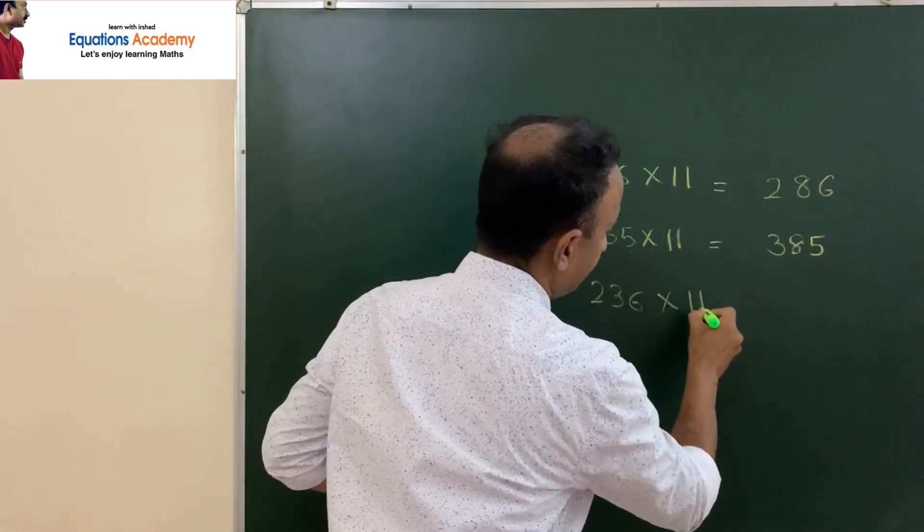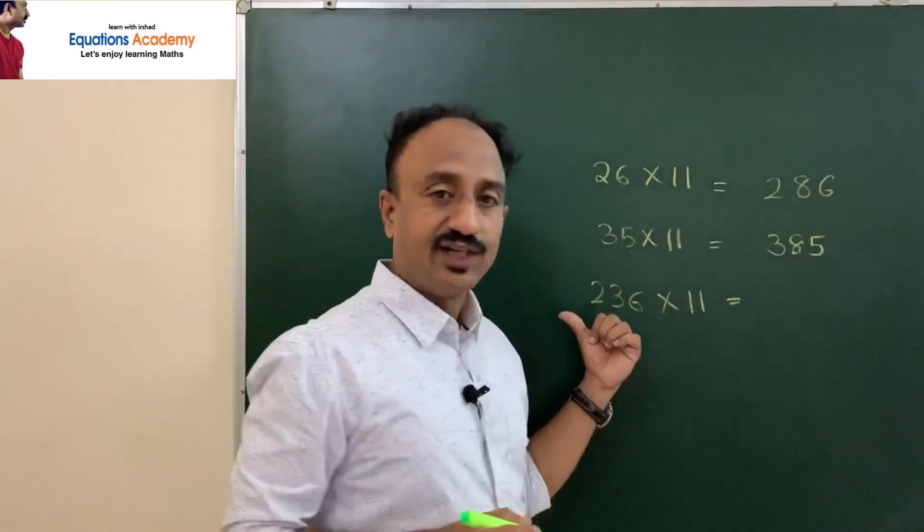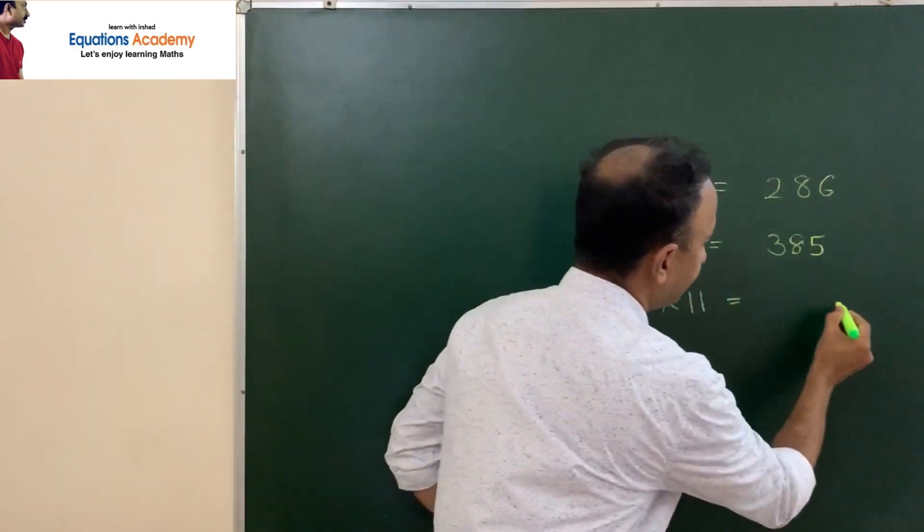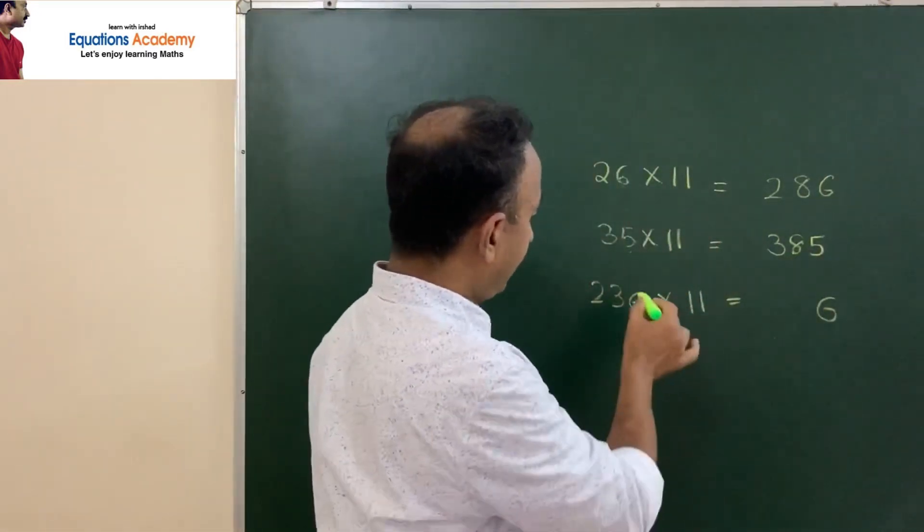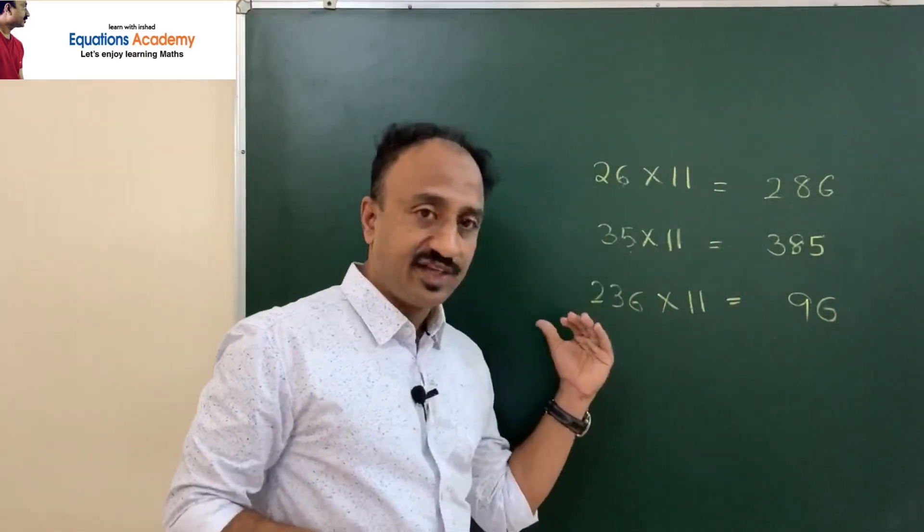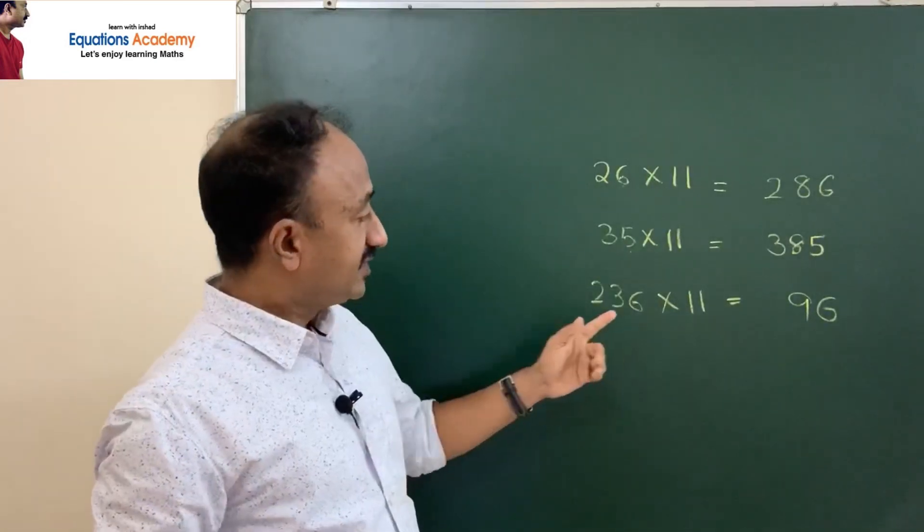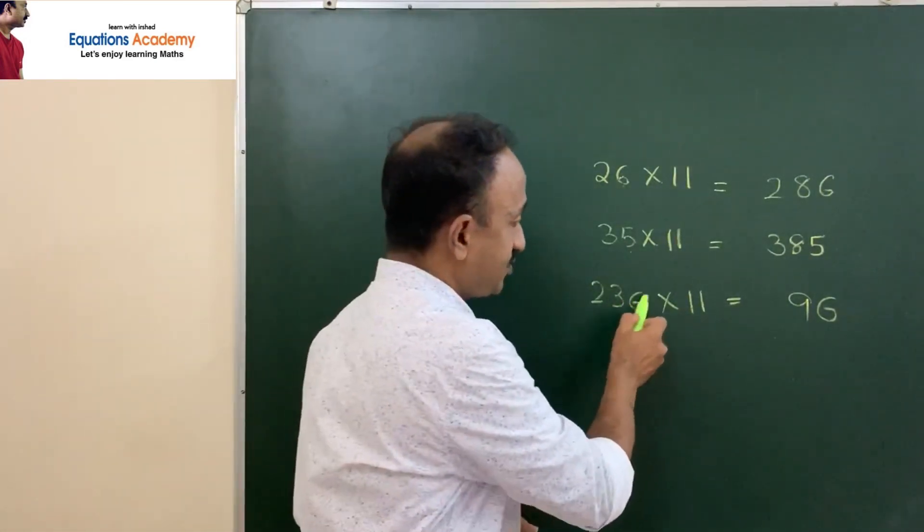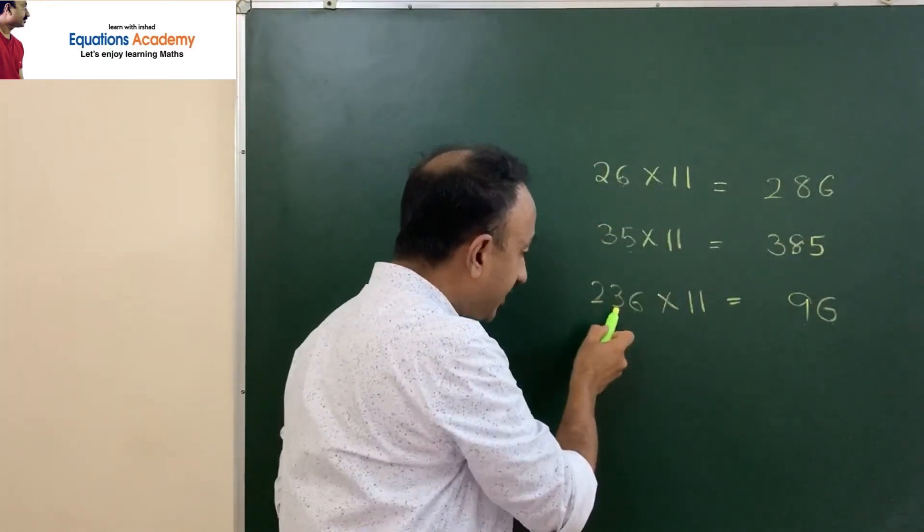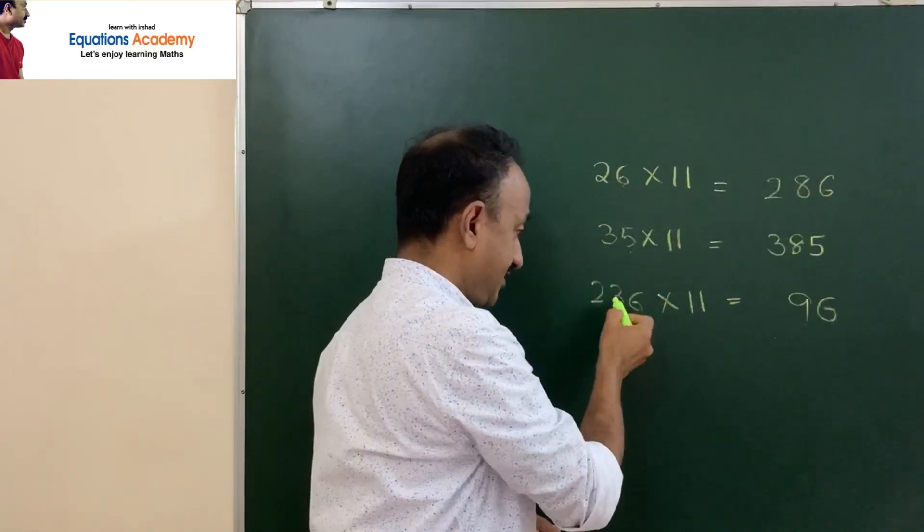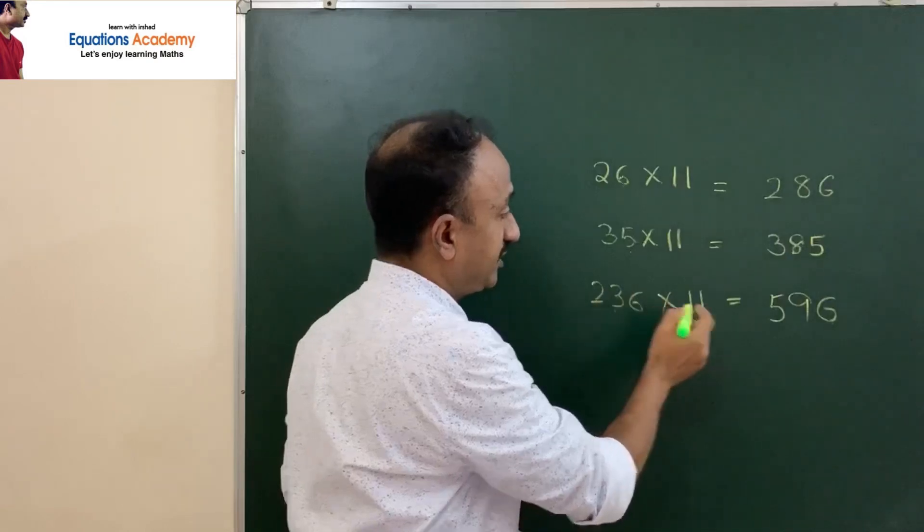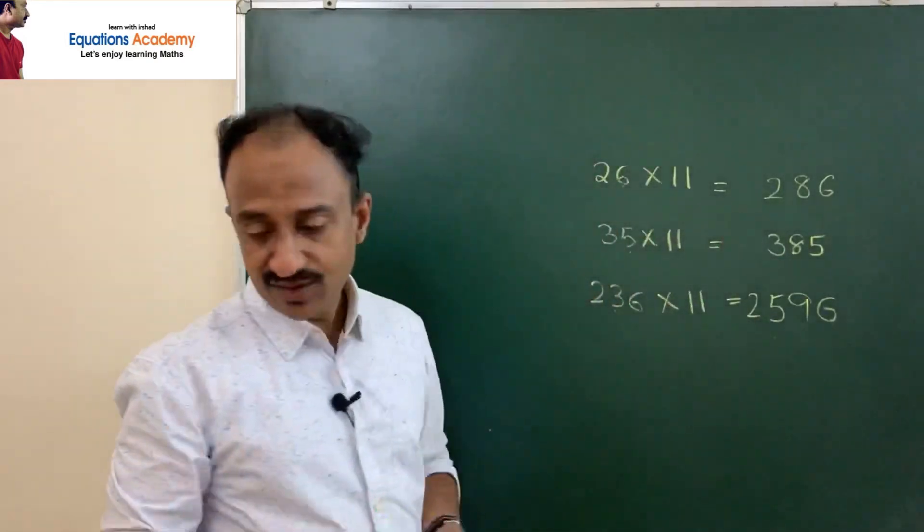36 times 11 is equal to, first write the 6 as it is, then 6 plus 3 is 9. This is 3, then 6 plus 2 is 9, then 3 plus 2 is 5. Then the last digit is 2, so 596.